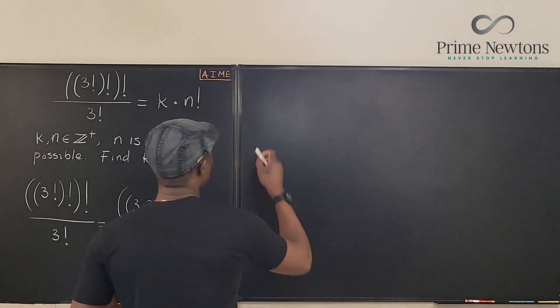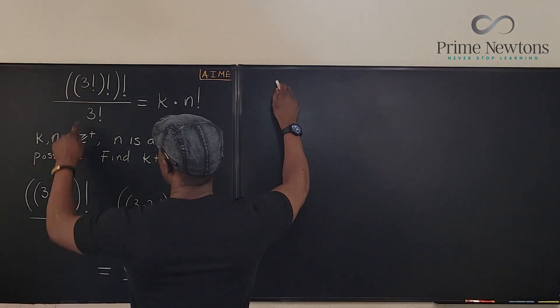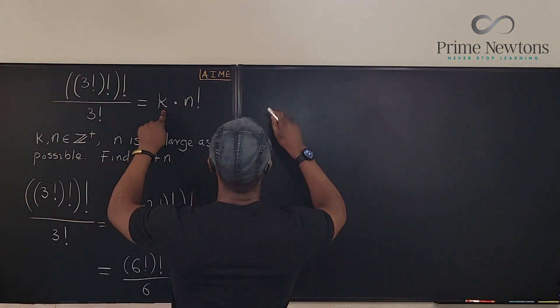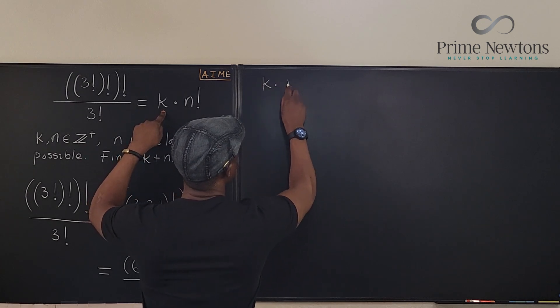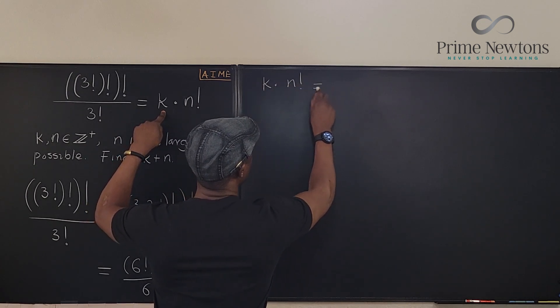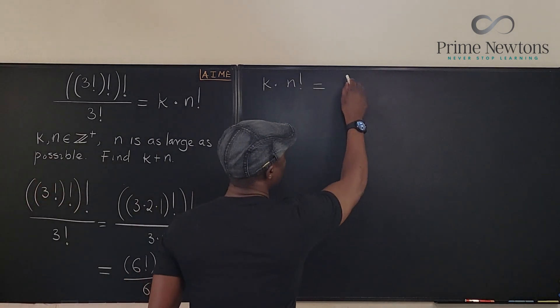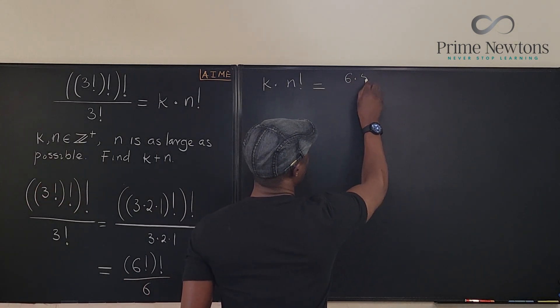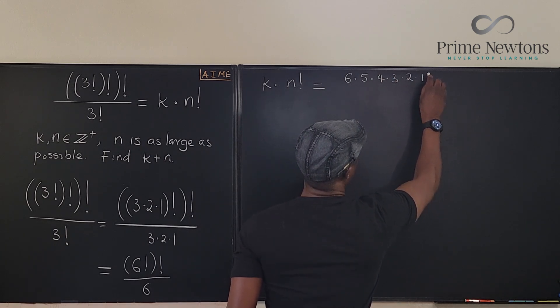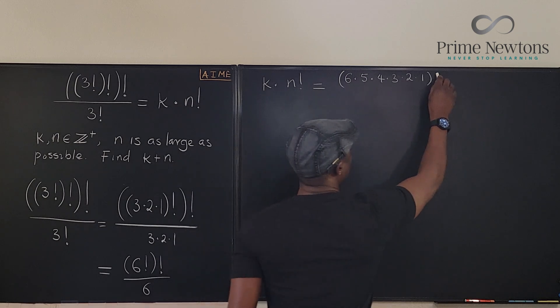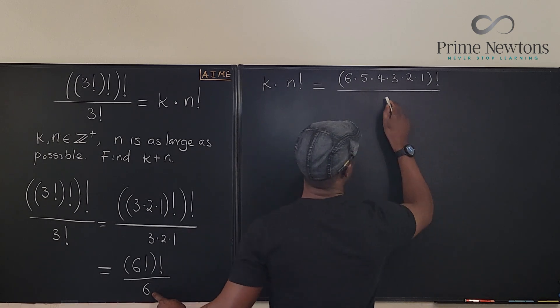So we know that this is equal to... Actually, I'm going to write this on this side. So I'm going to write k times n factorial, k times n factorial will be equal to what you have here. 6 factorial is going to be 6 times 5 times 4 times 3 times 2. Well, I always like to finish it. k times n factorial, over, what's under? It's 6.